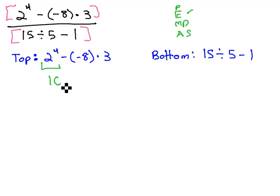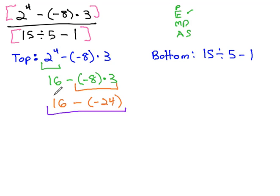2 to the 4th is 16 minus negative 8 times 3. Then we will do our multiplication, 16 minus negative 8 times 3 is negative 24. And finally, we'll add together 16 minus negative 24. Add in the opposite, we get 40 for our numerator on top.